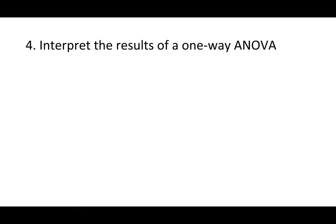Learning objective four is to interpret the results of a one-way ANOVA. We're going to use the five-step hypothesis testing procedure. Step 1 is to write hypotheses and check assumptions. The null hypothesis is that all population means are equal: mu for beer equals mu for water equals mu for wine. The alternative hypothesis is that at least one pair of population means is not equal — at least one mu sub i does not equal mu sub j, where i and j are labels for any two of the three groups.